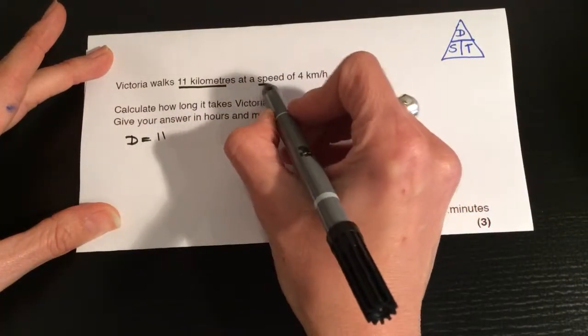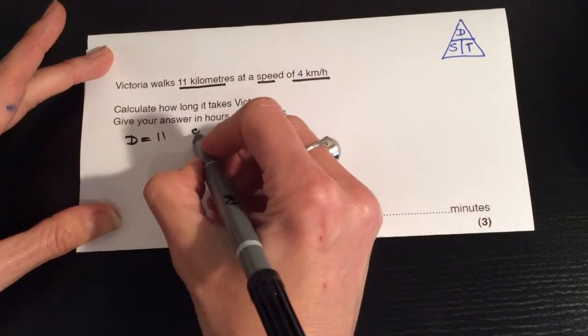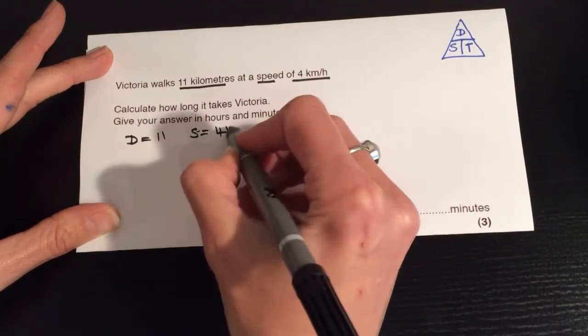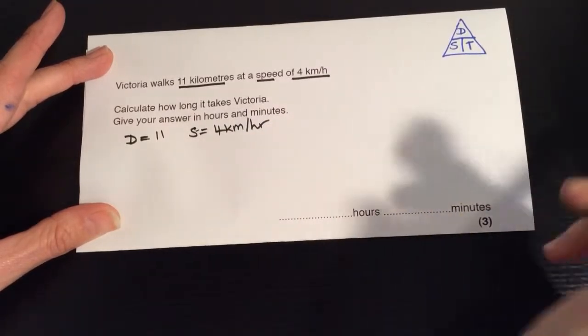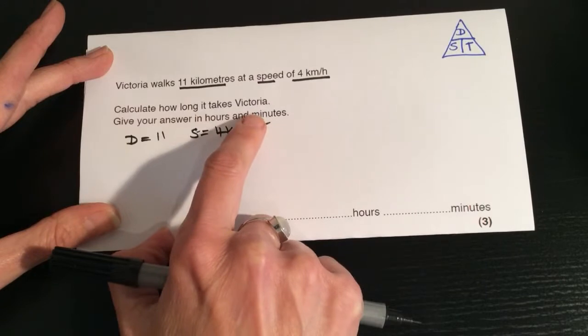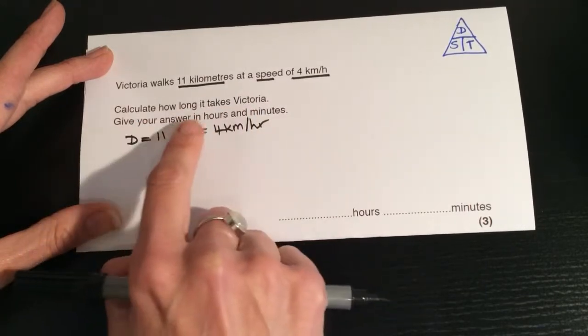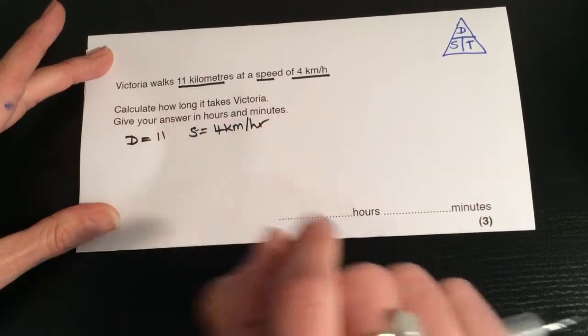And then we have the speed, which is 4 kilometres per hour. And the question is, calculate how long it takes Victoria. Give your answer in hours and minutes.